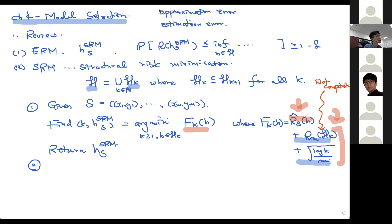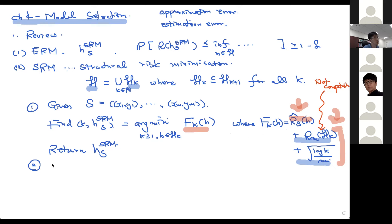Intuitively, this algorithm searches for a good model and a hypothesis at the same time using this new optimization objective. In practice, the algorithm designed based on structural risk minimization performs better than empirical risk minimization because it exploits more structure.